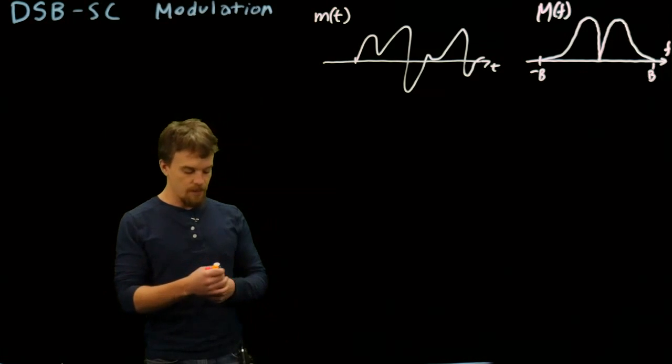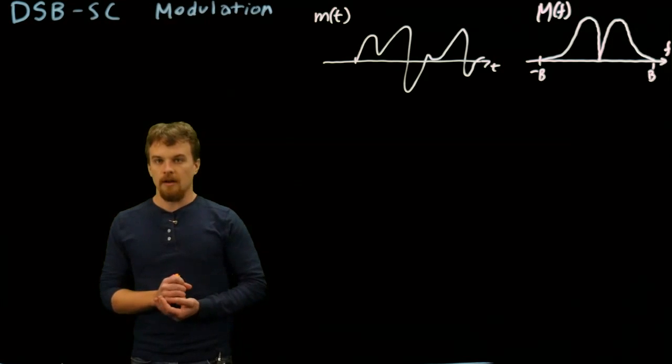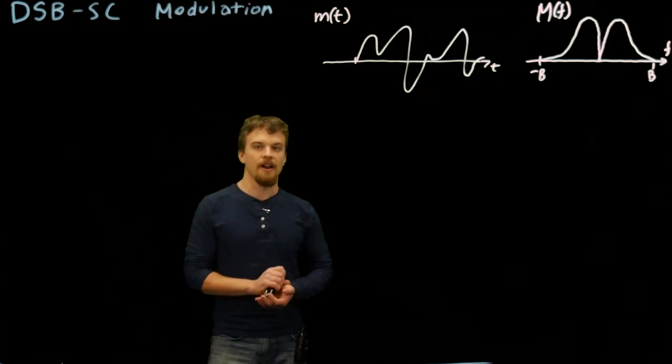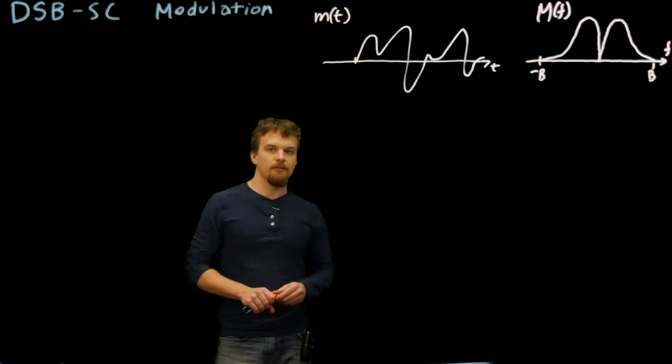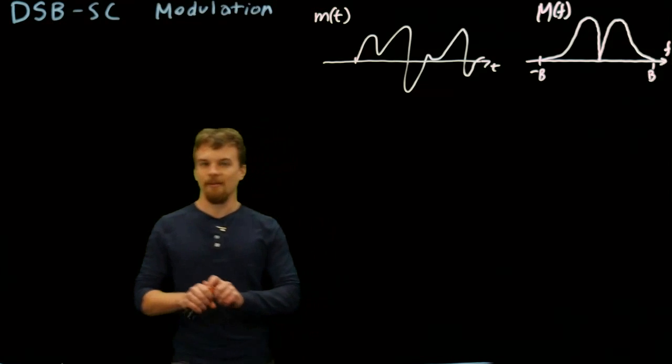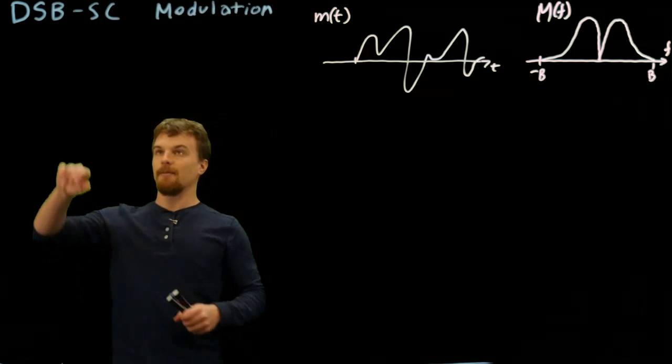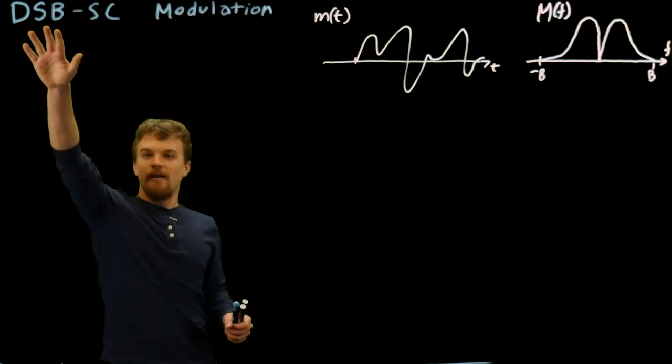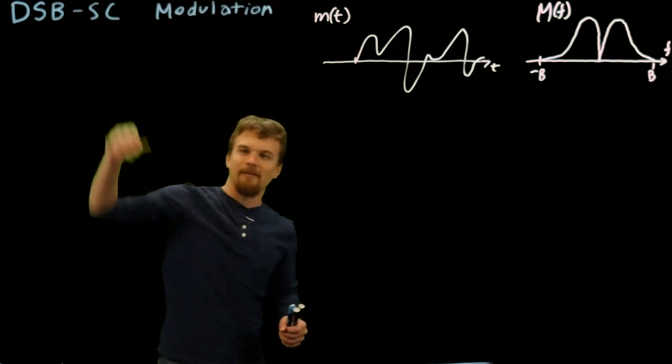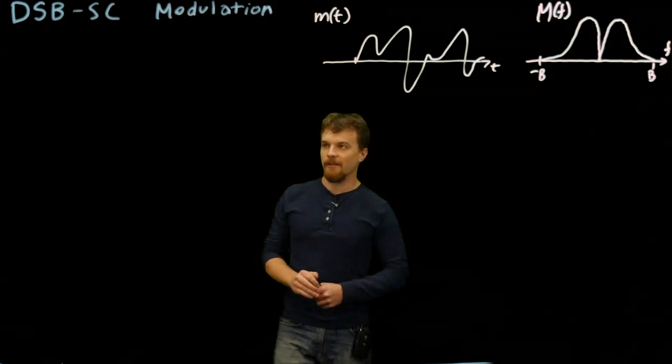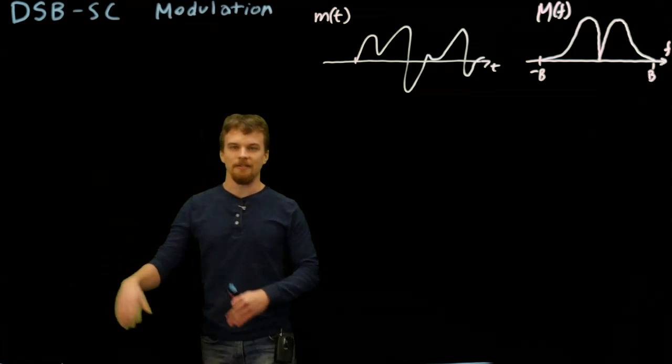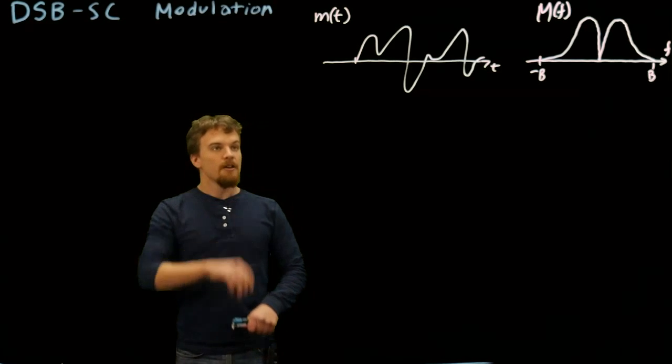It has this complicated looking name: double sideband suppressed carrier modulation. The reason we start with it is because it is the simplest theoretically to deal with, and we'll see over the course of talking about different modulation schemes why we have to reference those words to describe it—there's other sidebands, there's non-suppressed carrier.